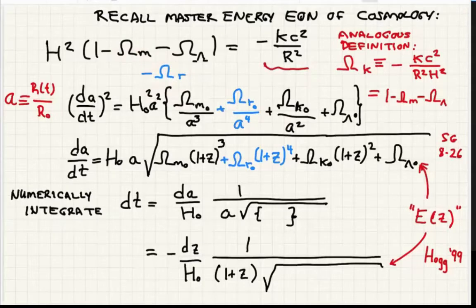By defining these omegas, the ratio of this energy compared to the critical density. I already defined my omega matter, omega lambda. I could also define omega radiation the same way. It's what is the energy density of radiation in the actual universe compared to the critical density.